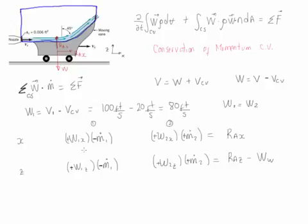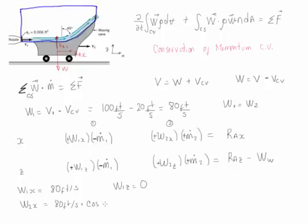We now determine the velocity components. w1x is the full component of w1 since the incoming velocity is in the x-axis, so it is 80 feet per second. w1z is zero because all of w1 is in the x direction. w2x is 80 feet per second times cosine of 45 degrees. w2z is 80 feet per second times sine of 45 degrees.